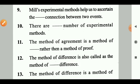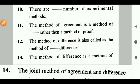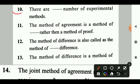Mill's experimental methods help us to ascertain the dash connection between two events. Answer: Causal. Question 10: There are dash number of experimental methods. Answer: 5. The method of agreement is a method of dash rather than a method of proof. Answer: Discovery. The method of difference is also called the method of dash difference. Answer: Single difference.